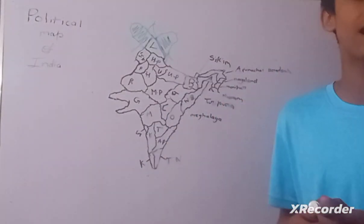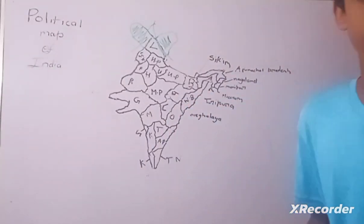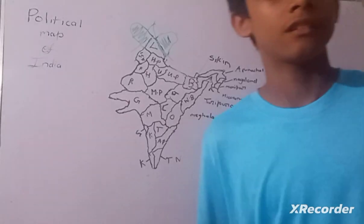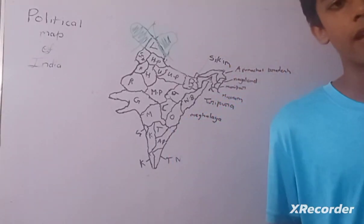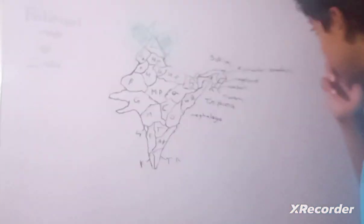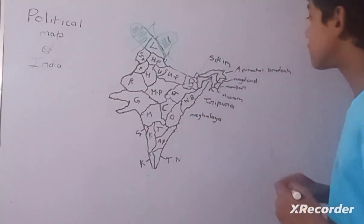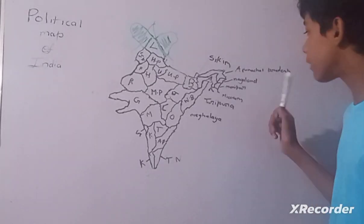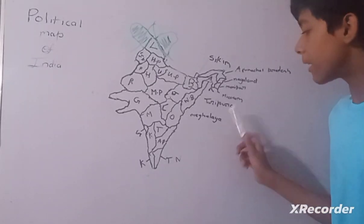Sikkim's capital is Gangtok and famous for mountain Kanchenjunga. Now we will talk about the seven sisters: Arunachal Pradesh, Nagaland, Manipur, Mizoram, Tripura, Meghalaya, and Assam.